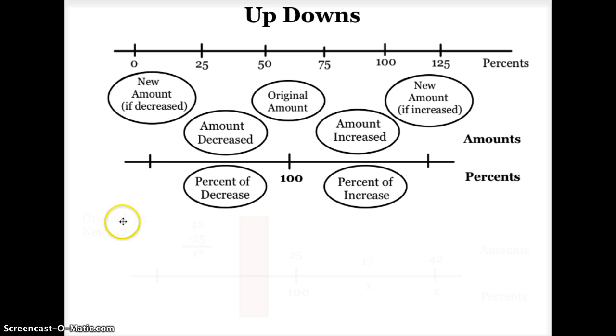Let's look at a problem. The problem I'm going to do is 25 is my original number, and 42 is my new number. To do these problems, the first thing I always do is make my double number line, and I label the bottom of my double number line percents, and the top of my double number line amounts.